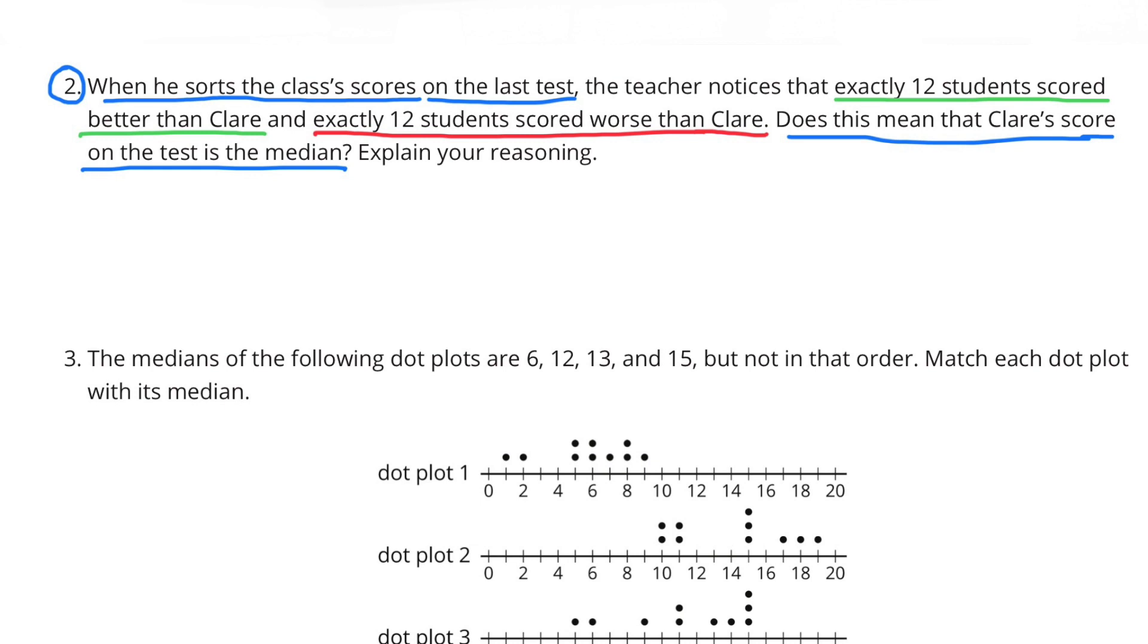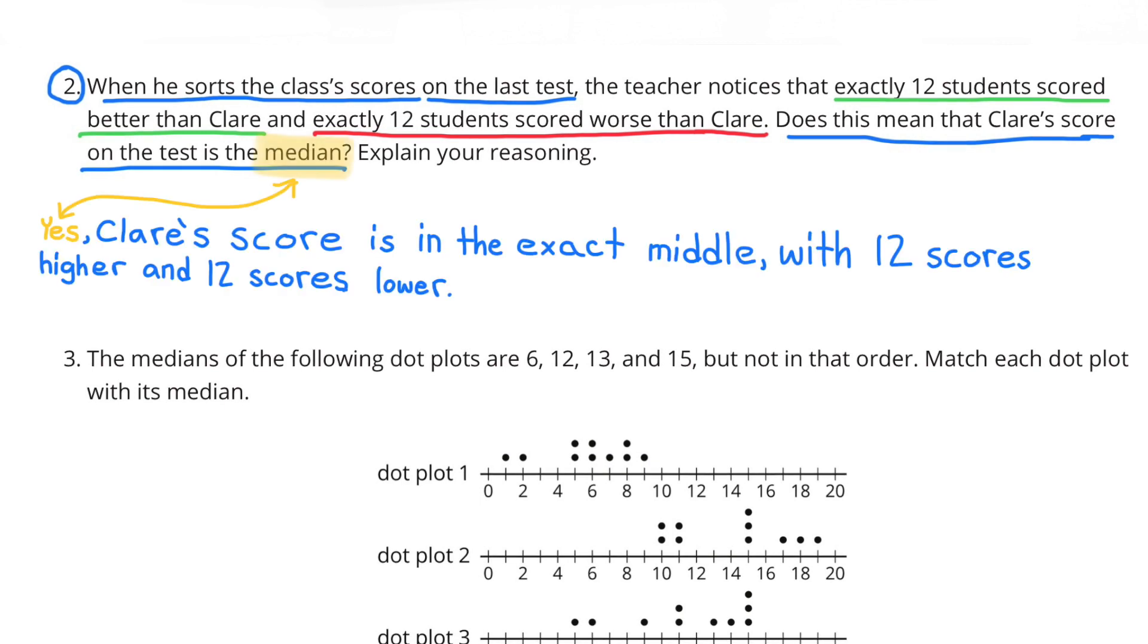Remember, the median means the middle score. If exactly 12 students scored better than Claire and exactly 12 students scored worse than Claire, yes, Claire's score is the median score because her score is in the exact middle with 12 scores higher and 12 scores lower.